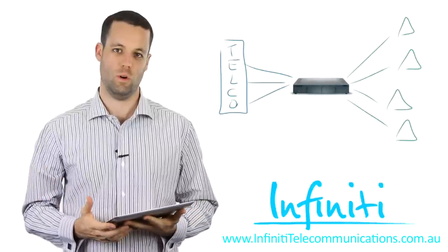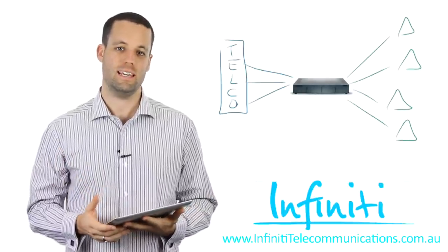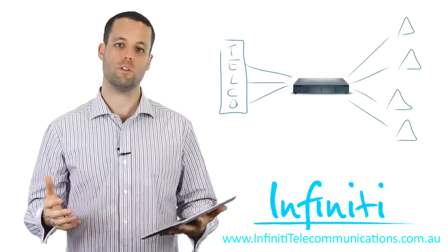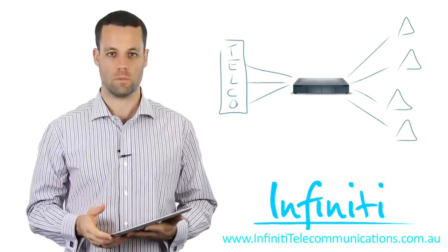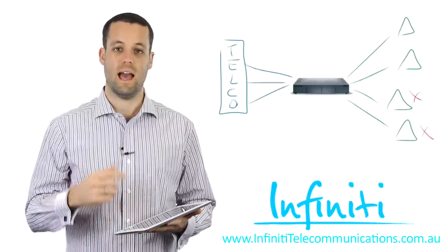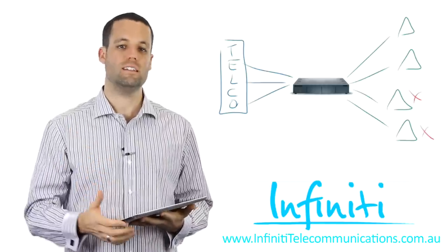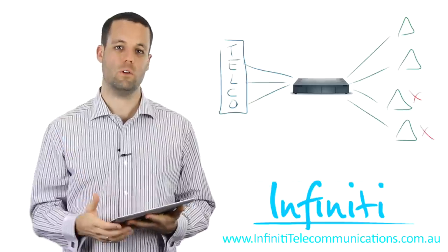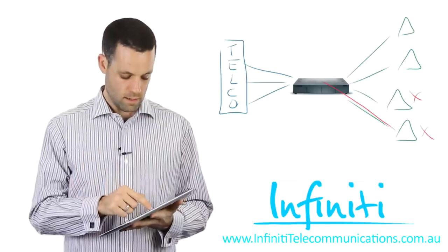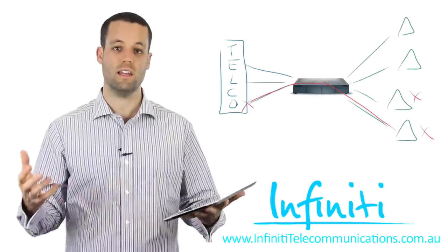So how does conference calling work when it comes to phone systems? In the example you can see here, this business has four handsets and three phone lines. Let's walk through an example of a conference call between two internal parties and a supplier outside the building. Someone first needs to engage the external party, so this person makes a phone call through the PABX, out one of the phone lines to that third party, and they're in a standard everyday phone call.